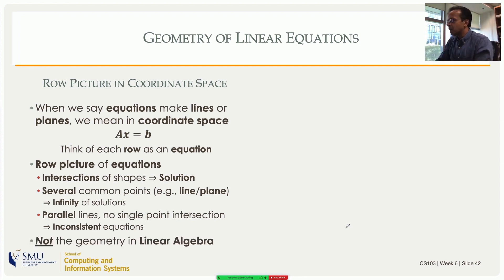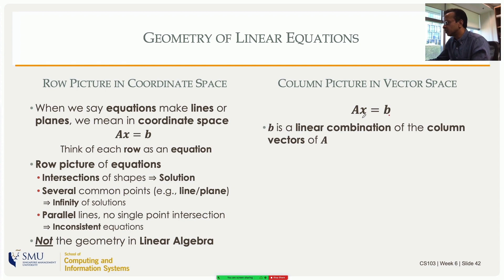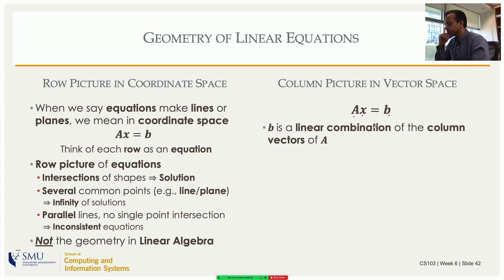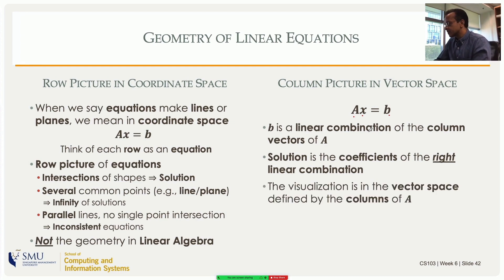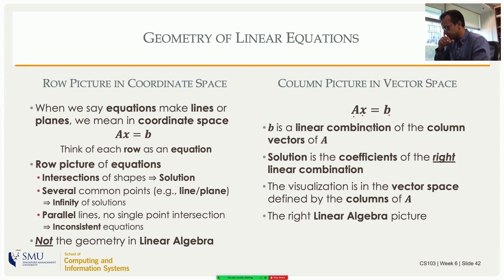There is another picture — the column picture — which lives in vector spaces. Here, b is a linear combination of the columns of A. The columns of A are vectors, and we are trying to find the right linear combination, so the solution gives us the coefficients x. This is a more sophisticated picture that leads to a deeper understanding of the structure of solutions and helps develop better algorithms.